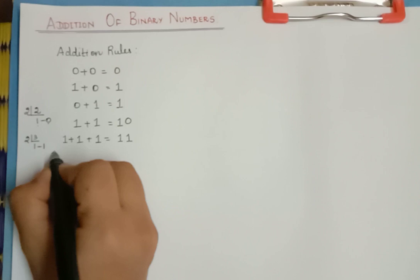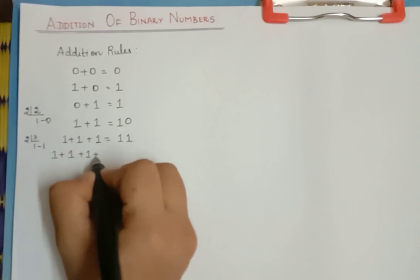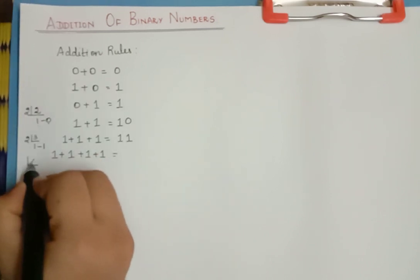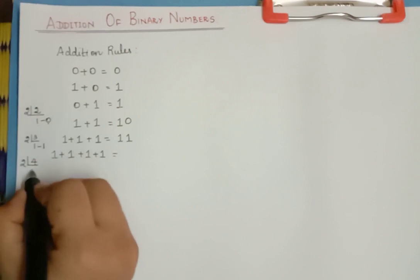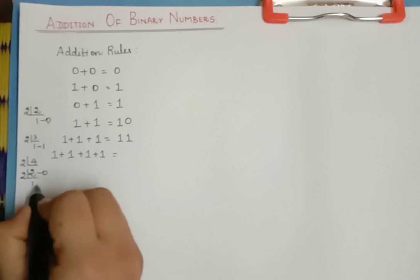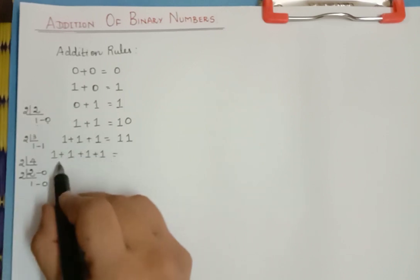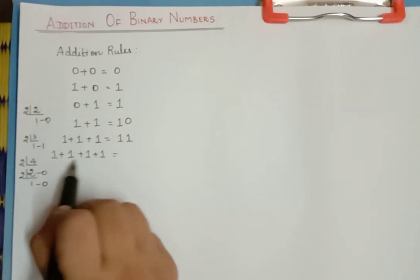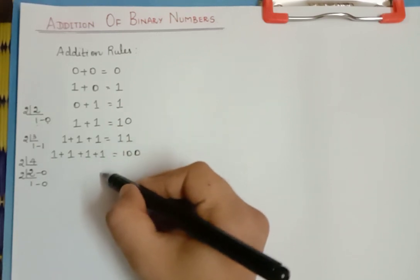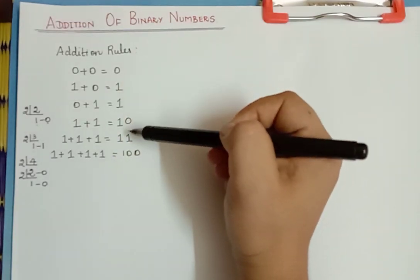Similarly, you can imagine for 1 plus 1 plus 1 plus 1 — that is four 1's. You divide 4 by 2, and that is 2 times 2 with remainder 0, then 1 time with remainder 0. So the binary representation of adding four 1's is 100. Similarly we can find for other numbers also. But this is the basic rule for addition.